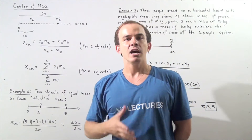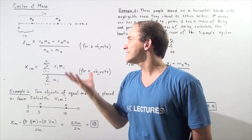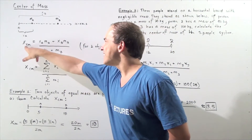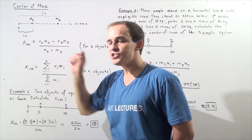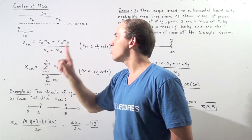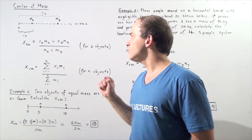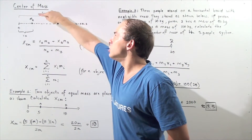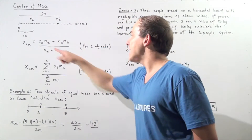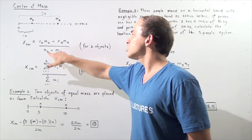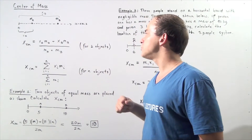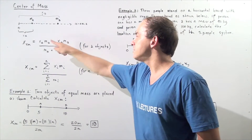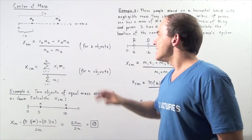Using these four variables, we can calculate the center of mass of our two-object system. The location of the center of mass with respect to the zero mark equals the sum of the product of the location and the mass of each object, divided by the total mass. So we have: xA times MA plus xB times MB, divided by MA plus MB.